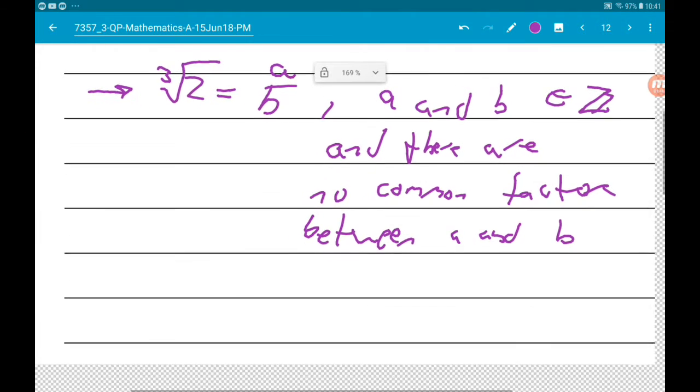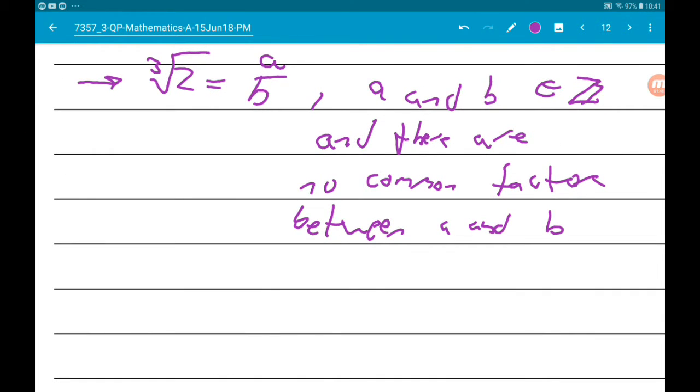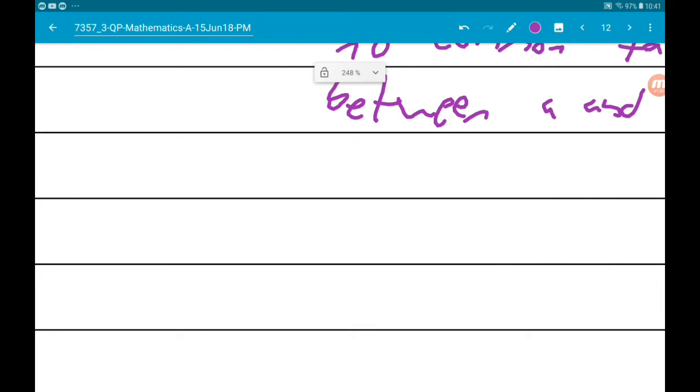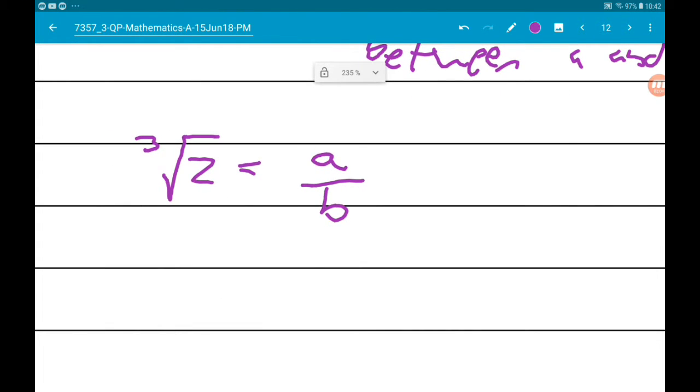If that's true, let's see if we run into any trouble. If the cube root of 2 equals a over b, then 2 equals a cubed over b cubed.